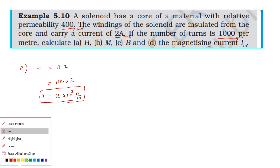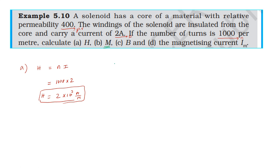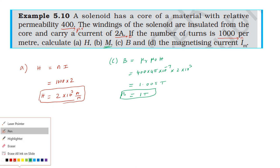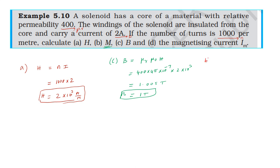Now for B, the magnetic induction. Using the formula for magnetic induction in the solenoid with the core material, we calculate B.